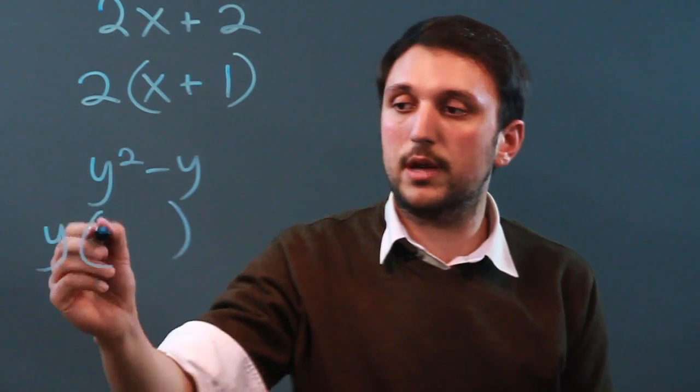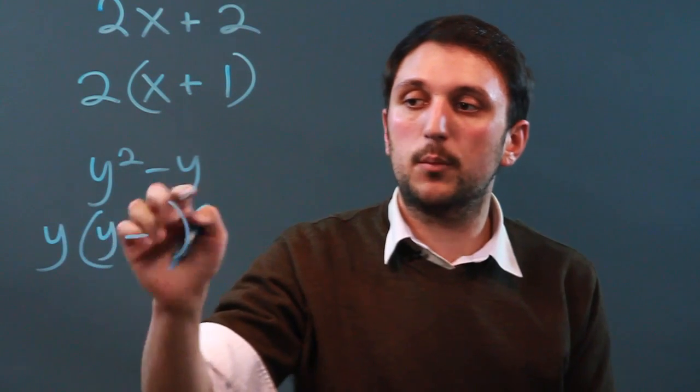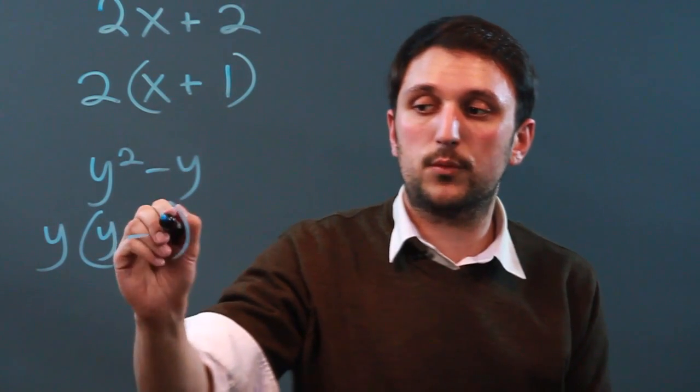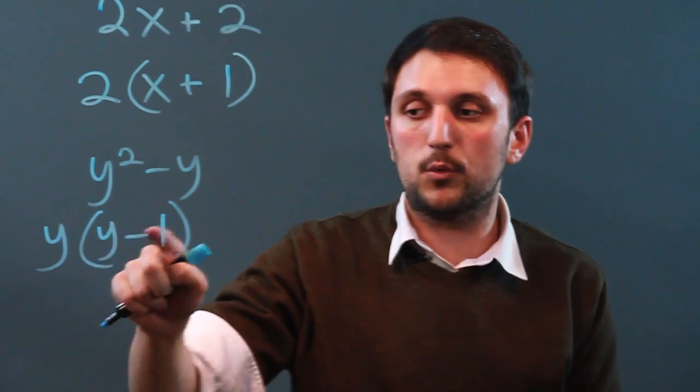well we pull a y out of y squared, and we get y. And we pull a y out of y, and we're left with 1. So it's y times y minus 1.